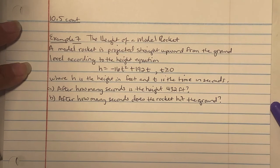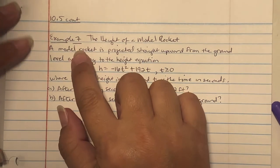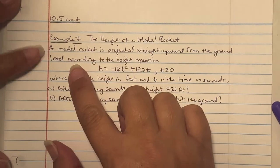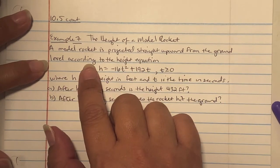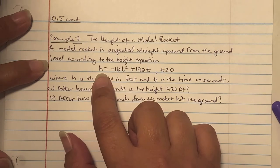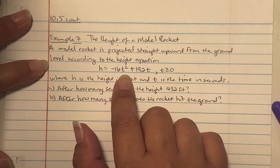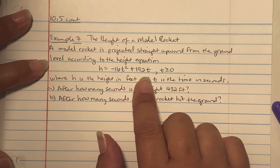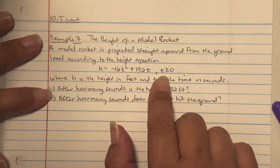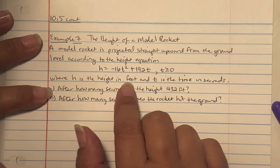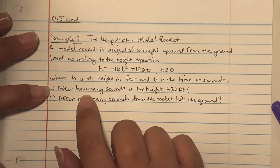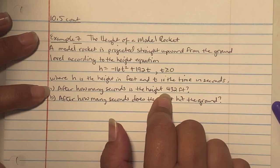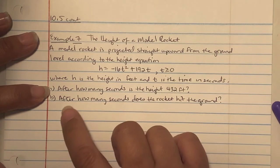Example 7, the height of a model rocket. A model rocket is projected straight upward from the ground, following the height equation h equals negative 16t squared plus 192t, where h is the height in feet and t is the time in seconds. Find after how many seconds is the height 432 feet, then after how many seconds does the rocket hit the ground.